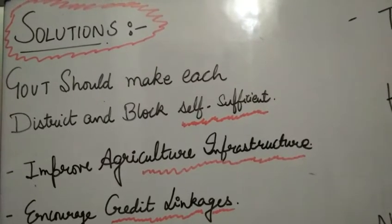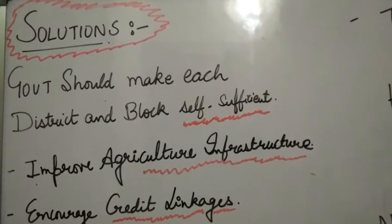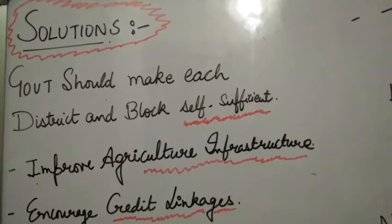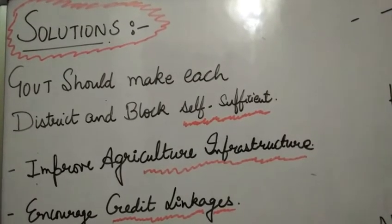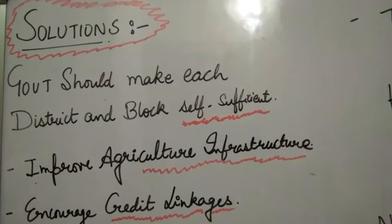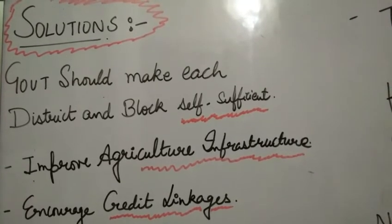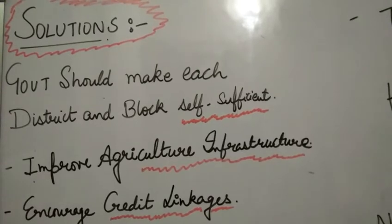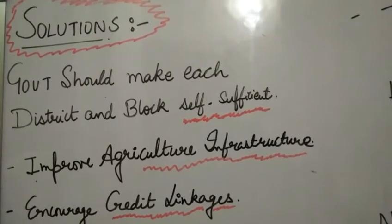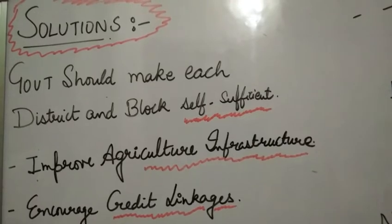After understanding the problems, let's look at solutions. The government should make each district and block self-sufficient. As we saw, in regions like Punjab and Haryana, MSP for wheat and rice leads people to grow more and more of only those crops. Instead, the government should encourage each district and block — the third tier of government at the grassroots level — to make people self-sufficient, so food security issues will not arise.